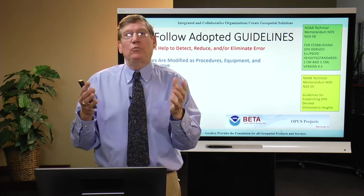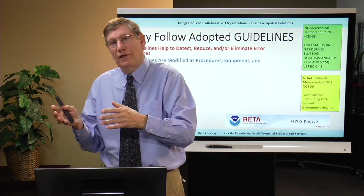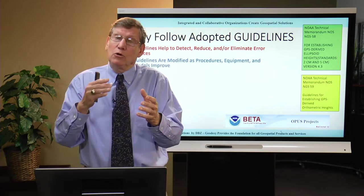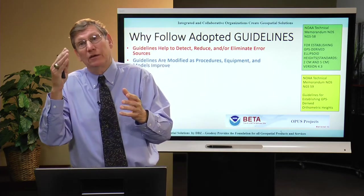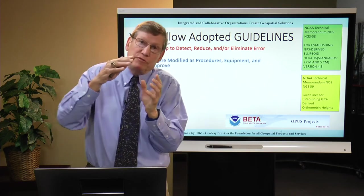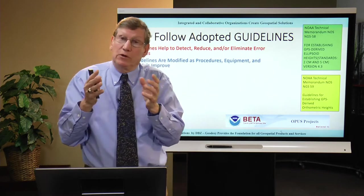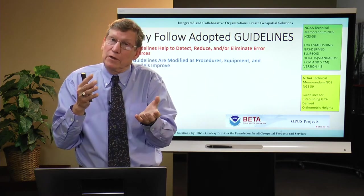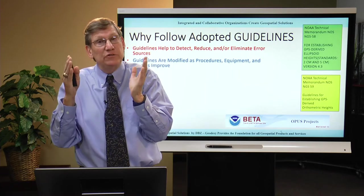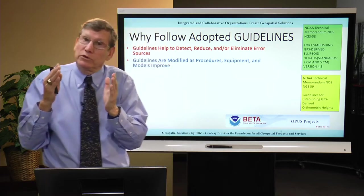I was the main author of the GNSS-derived ellipsoid guidelines. When developing them, I would set up models and talk to users. For example, I told surveyors they had to observe for three hours on two different days at different times of day. A user came back and said he'd observed four hours on two consecutive days at 8 AM and his answers agreed to a millimeter. But when he went at 2 PM, they didn't agree, because the change in satellite geometry, atmosphere, and multipathing all affect the result. That's why we recommended different days and times.